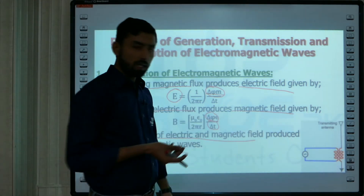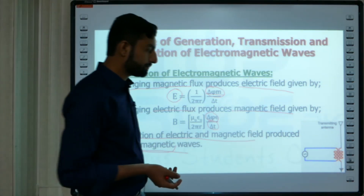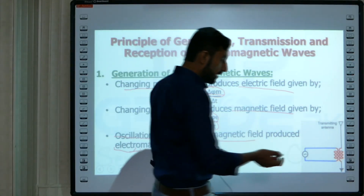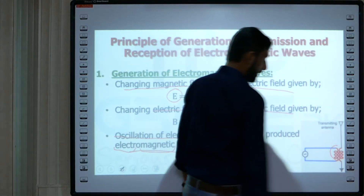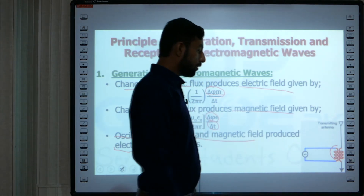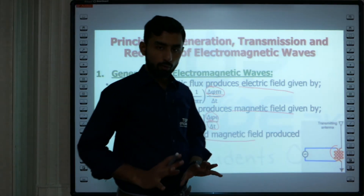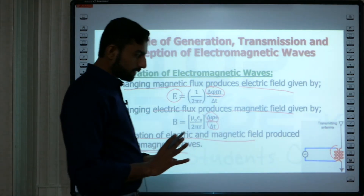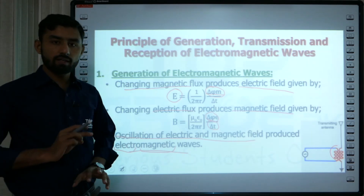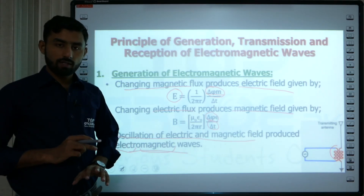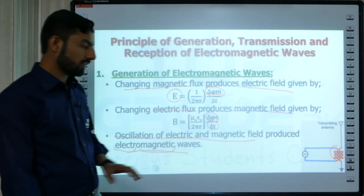This can be easily produced with a simple circuit. Here you can see an inductor. When you provide AC — which is a varying source — you can see that the direction changes, demonstrating the alternating nature of the current.